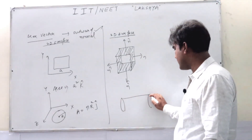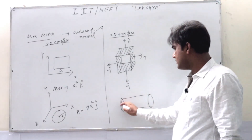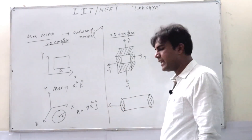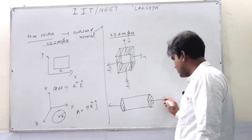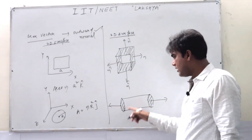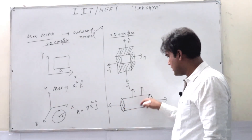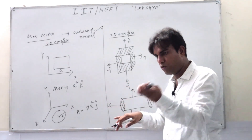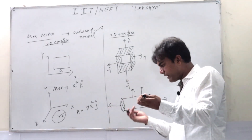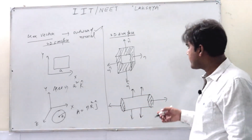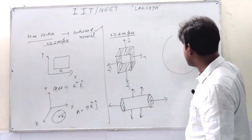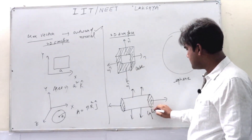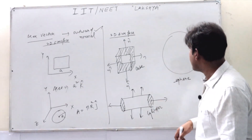Suppose you are having a cylinder — this is one surface, this is another surface, and one is the curved surface. For the top surface you can take this as the area vector — the outward normal pointing upward. For the bottom surface you can take this as the area vector — the outward normal pointing downward. For the curved surface you take the outward normal pointing radially outward. Similarly you can consider a sphere.